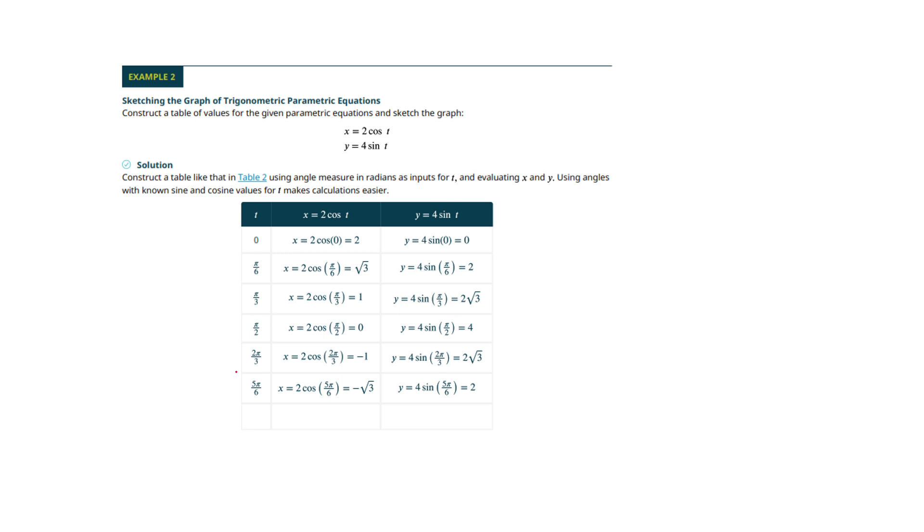Well, we're just picking different radian angles for t and finding their trig functions. Now do notice this. They're picking obvious ones. They're picking ones that we know from the unit circle. They're getting the values and then they're going to graph those points, just like before.